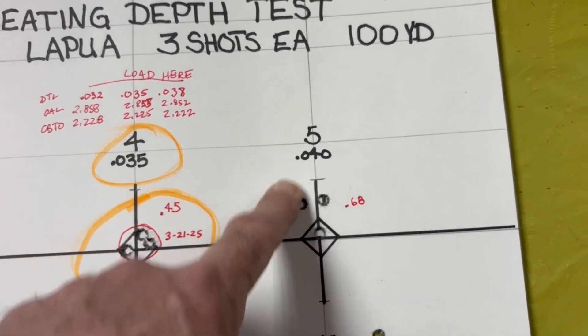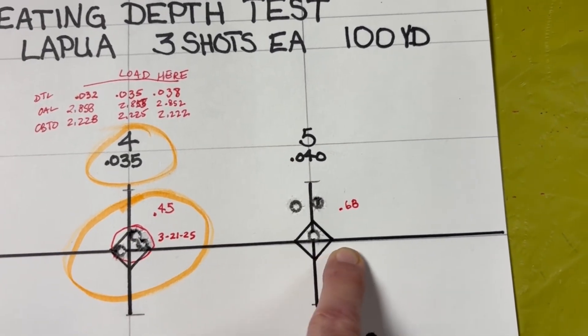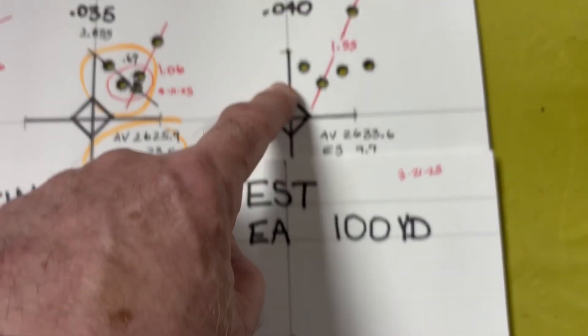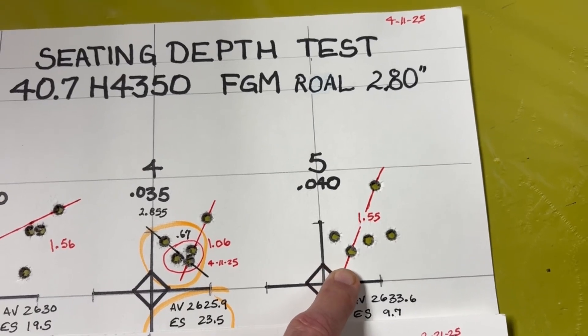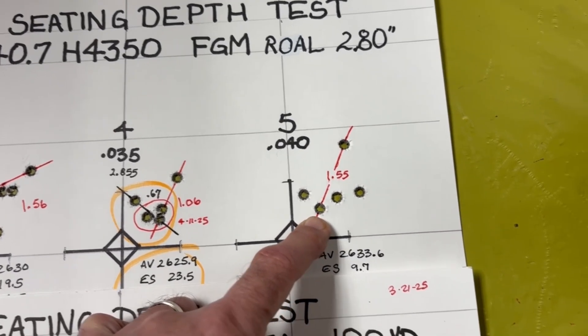Okay, so very similar, if you look at this target today and the target from three weeks ago, the clustering there is very similar. Three weeks ago at 0.040, we were at 0.68 inches, and again, a good group is not going to guarantee that it will always group well in the future.